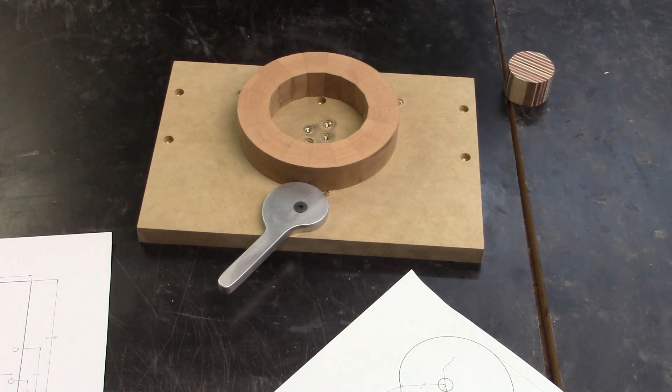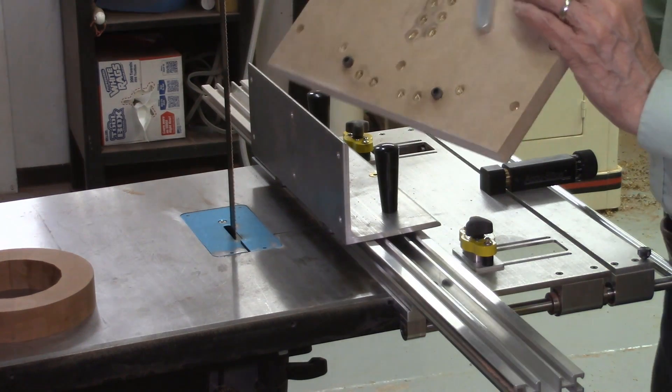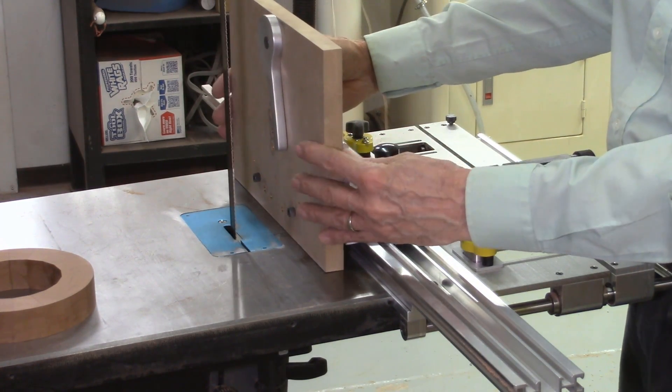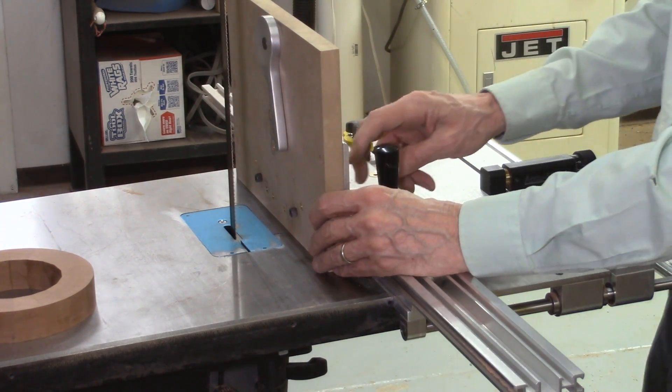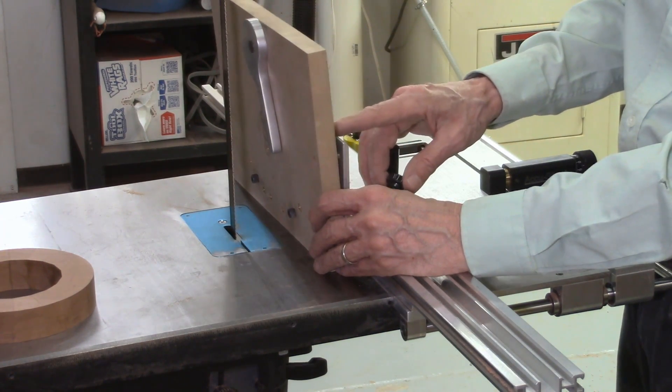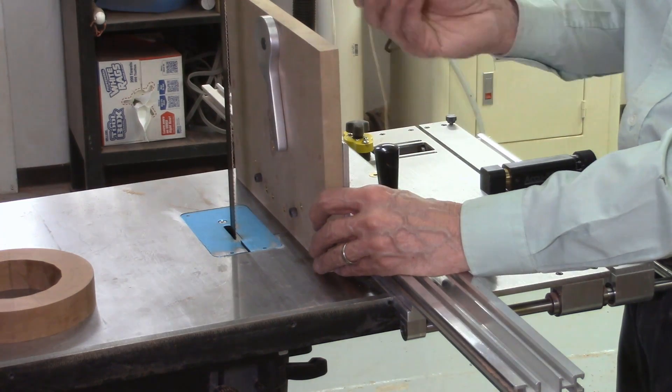Okay, so let's go mount this on the bandsaw and give it a try. Okay, we're all set now to attach our offset cam clamping fence to our carriage.